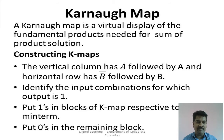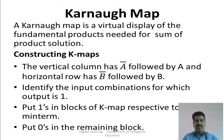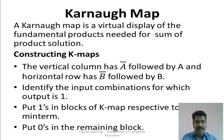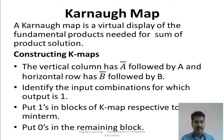Now, how to construct this Karnaugh map — I will tell you step by step. The first step: the vertical column. I am discussing only two-variable inputs here, A and B, and we will move to three-variable input after this. The vertical column has A-bar followed by A, and the horizontal row has B-bar followed by B. The given Karnaugh map has columns A-bar, A and rows B-bar, B.